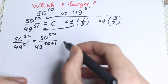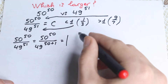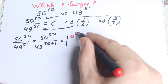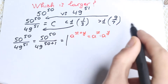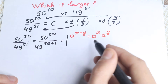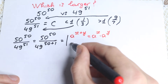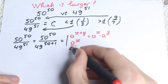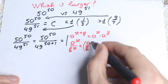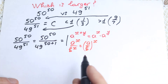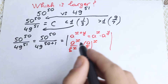Because if we know the power rules: first rule — a to the power x plus y equals a to the power x times a to the power y. Second important rule: a to the power x divided by b to the power x equals a over b, all raised to the power x. These are two really important rules for our question.